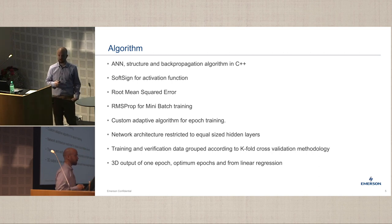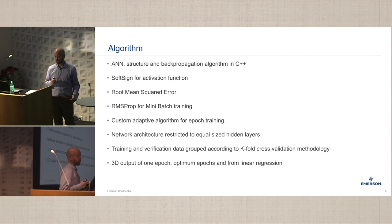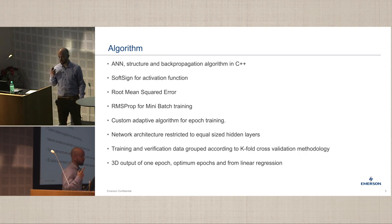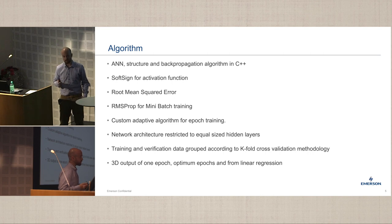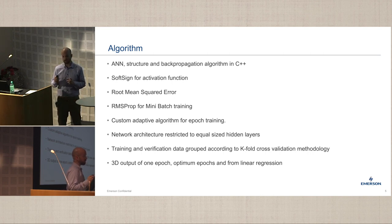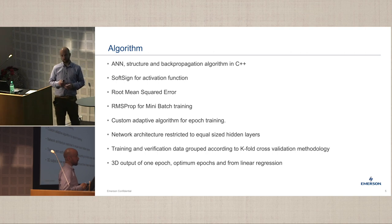The output from the algorithm was in 3D — so grid parameters. We got results from one epoch or one iteration, which was the best one. Then we have the optimum epochs, where we gathered the best results from the different validation groups, merged them together and took the average. And also for comparison, we have the output from the multilinear regression.